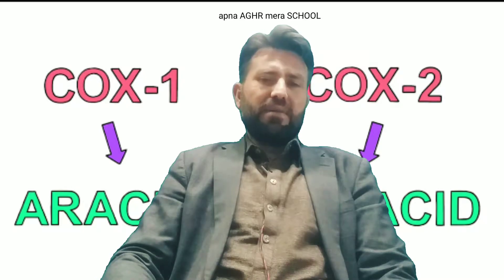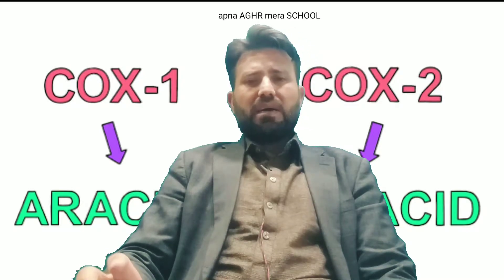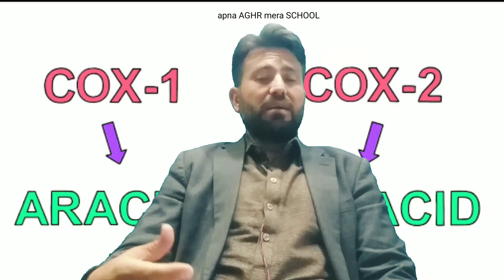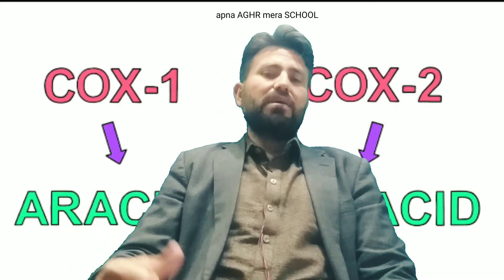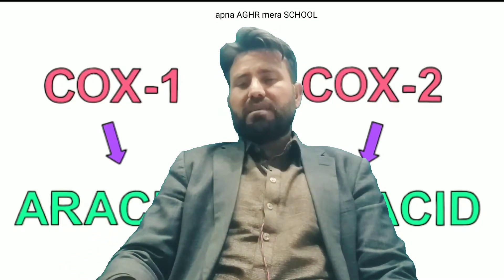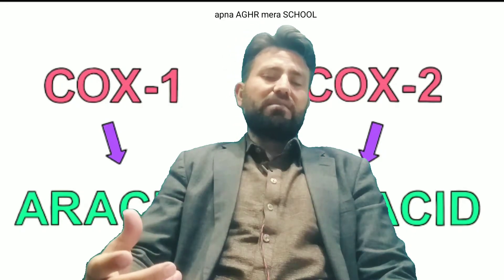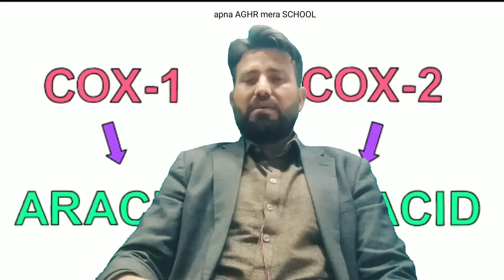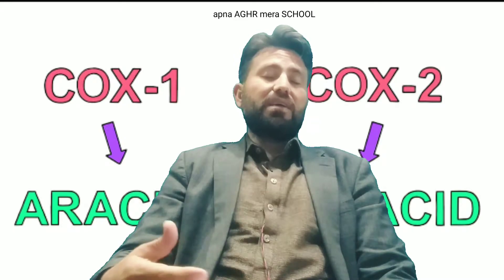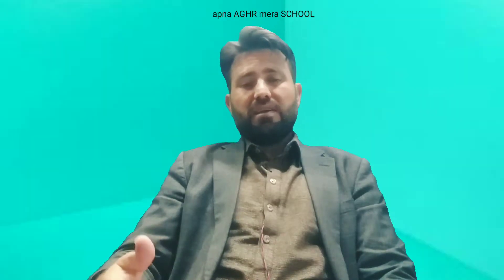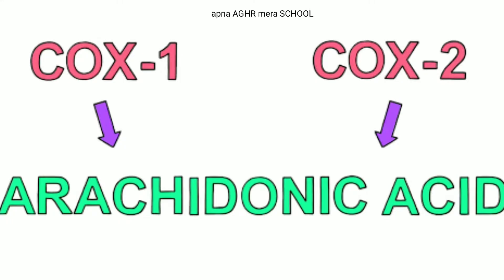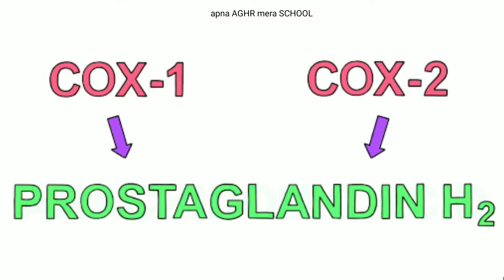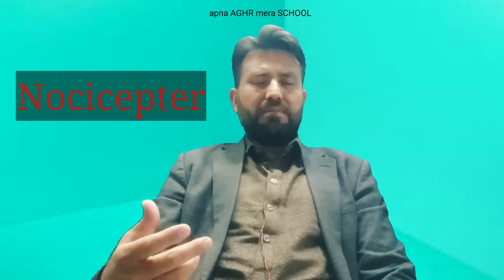These are cyclooxygenase enzymes. COX-1 is found in the stomach and also helps in the function of the kidney and platelets. It protects the stomach from the effect of gastric juices. COX-2 enzyme is found in regions of the body where there is inflammation, swelling, or injury. Arachidonic acid combines with COX-1 and COX-2 enzyme to make prostaglandins. The nociceptors detect the prostaglandins and send the message of this injury to the brain through two types of neurons.